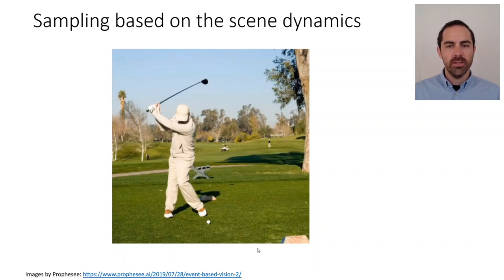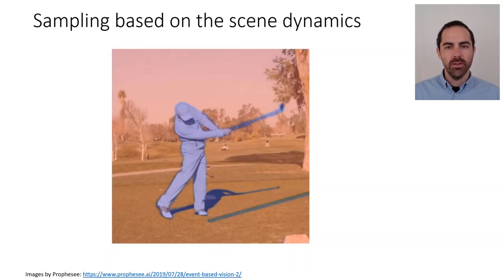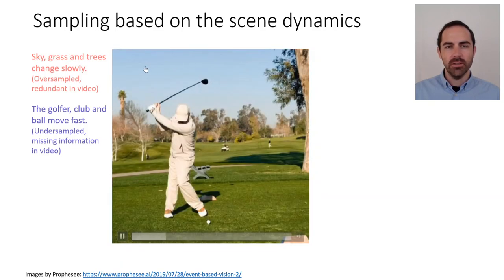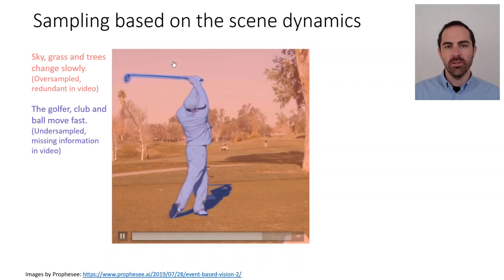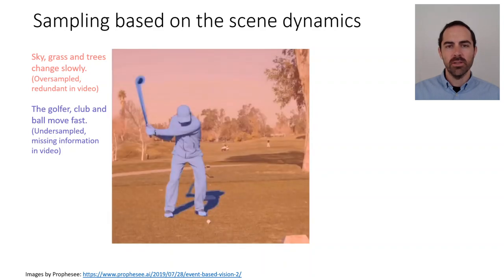A nice way to better understand how an event camera works compared to a standard camera is to look at a toy example, such as the dot on a spinning disc, the tennis player, or in this case the golfer — an example by the company Prophesee. Imagine we are viewing this scene, and we color different pixels in the camera. The pixels marked as pink, such as the sky, the grass, and the trees — in these pixels the intensity changes slowly. So if we use a standard sampling rate, a standard camera acquiring an image 25 times per second, all these pixels are being oversampled.